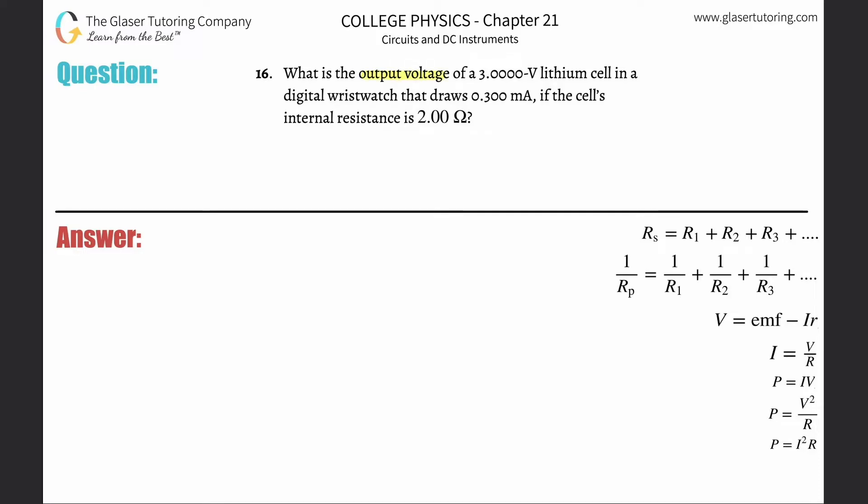Number 16: What is the output voltage of a 3-volt lithium cell in a digital wristwatch that draws 0.3 milliamps if the cell's internal resistance is 2 ohms? First of all, you've got your little battery, and the battery says 3 volts on it. That's the theoretical maximum, so you've got to keep that in mind.